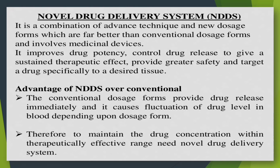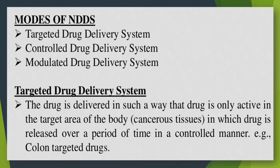Conventional dosage forms provide drug release immediately, causing fluctuation of drug levels in blood depending upon the dosage form. Therefore, to maintain drug concentration within the therapeutically effective range, a novel drug delivery system is needed. The modes of NDDS include targeted drug delivery system, controlled drug delivery system, and modulated drug delivery system.